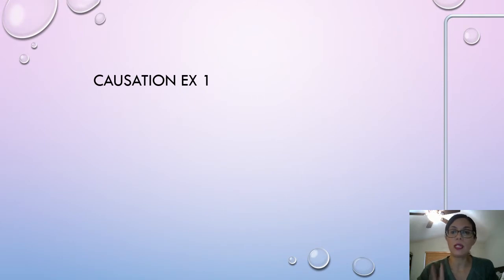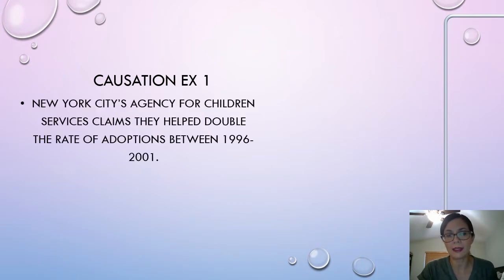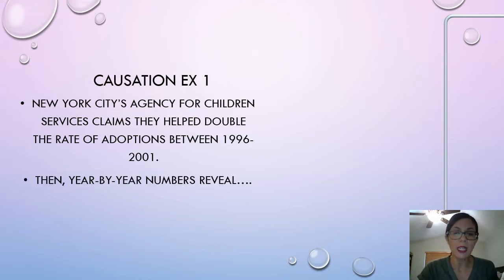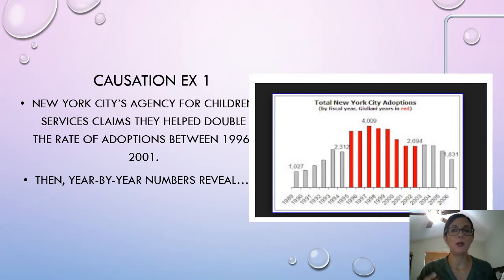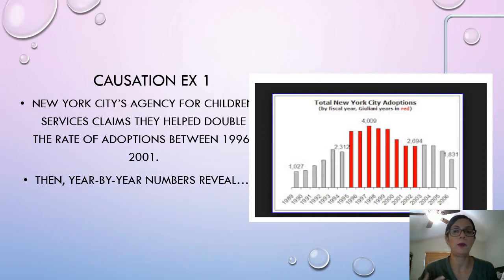Let's look at examples of causation. This is one we've seen before — New York City's Agency for Children claimed that they helped double the rate of adoptions. But when we looked at the year-to-year data, the info was a little different. The year they opened there was a big increase, but it was probably just one small factor, since there was already an upward trend. It may have been due to economic reasons — people were wealthier and had more money to spend on adoption, which can be a really expensive process.